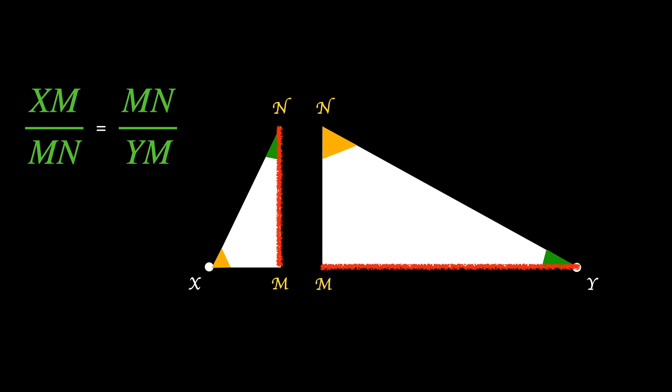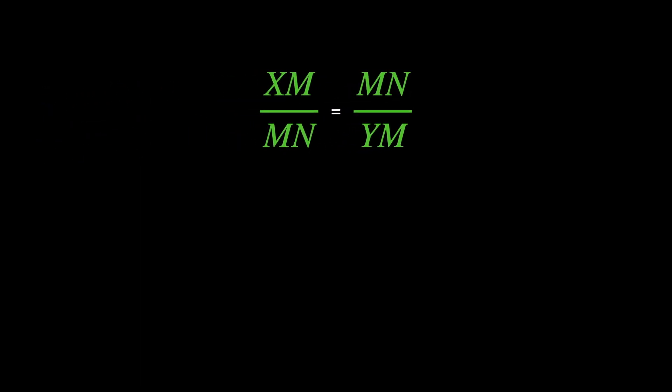So these two are equal because the triangles are similar. We are almost done. Let's take this ratio and cross multiply. So XM times YM is MN square. But XM was A and YM was B. So we get MN is equal to square root of A times B.